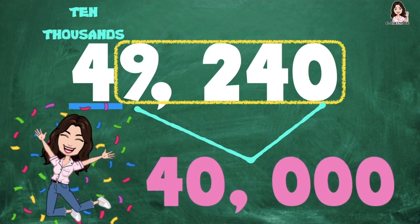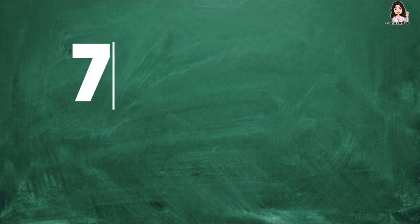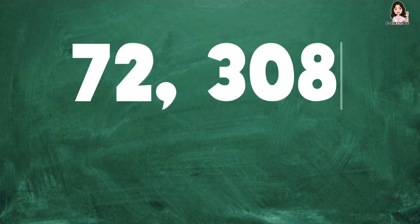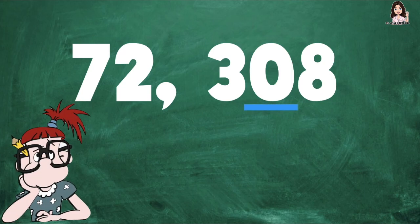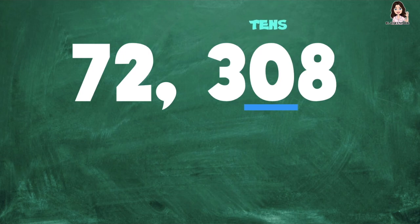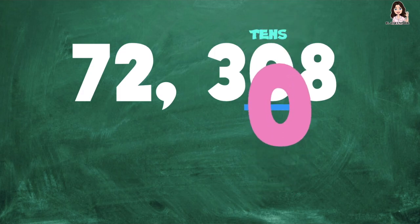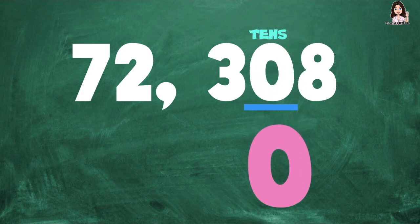How about if we have 72,308? What is the value of digit 0? Since digit 0 is at the tens place, the value is zero. Always remember: if the digit is 0 and you're getting the value, the value will be 0.